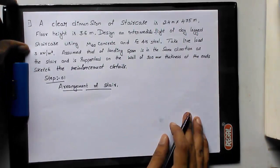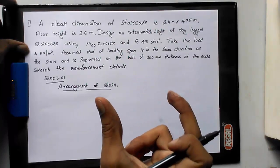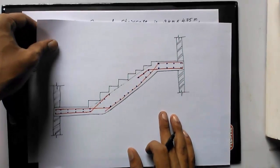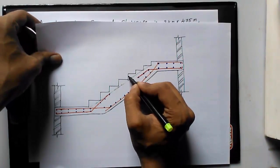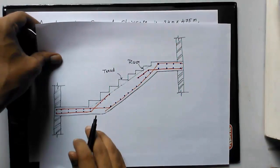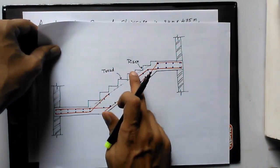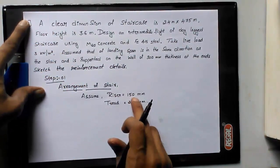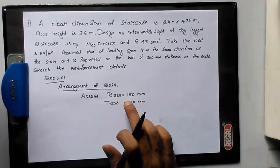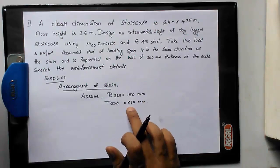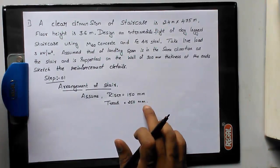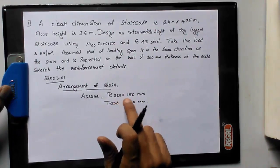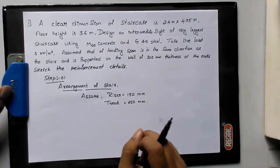Step 1 is the arrangement of the stair. We need to assume the riser height and tread width. The riser is the vertical component and the tread is the horizontal component of each step. A riser ranges from 150 mm to 200 mm and a tread ranges from 250 mm to 300 mm. Here I am assuming riser = 150 mm and tread = 250 mm.